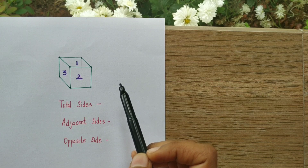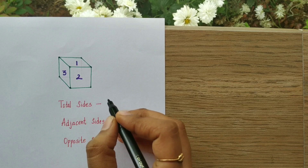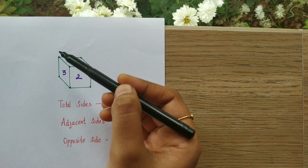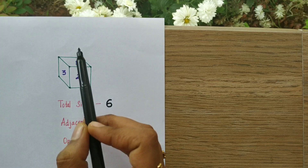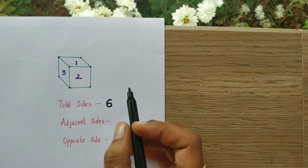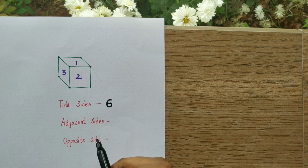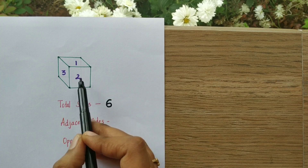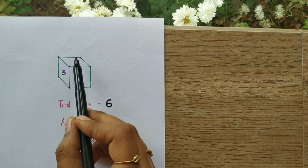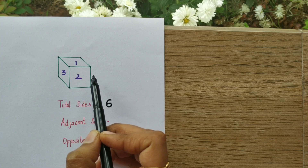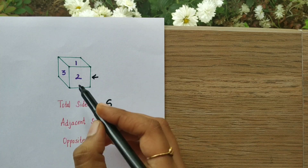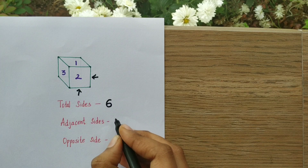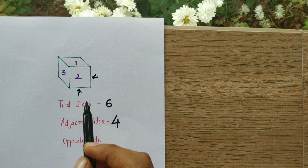How many total sides are there in a cube? We have six sides — one, two, three, and the back side. Two, back side three, and the opposite side of one — so we have totally six sides. How many adjacent sides can there be? Let's check for two. So for two, three is an adjacent side, one is definitely an adjacent side, and there will be adjacent sides on the other portions as well — so totally four adjacent sides.